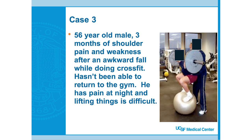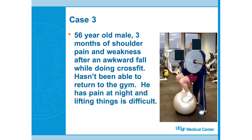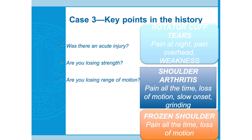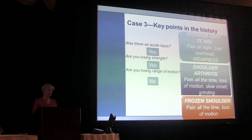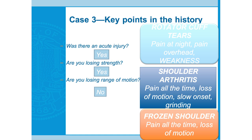Case three: 56-year-old male with three months of shoulder pain and weakness after an awkward fall doing CrossFit — CrossFit keeps me in business. He hasn't been able to return to the gym, has pain at night, and lifting is difficult. Running the algorithm: acute injury — yes. Losing strength — yes. Losing range of motion — not really. He has pain at night, pain with overhead activity, and weakness, but no restrictions in motion and no grinding, which rules out frozen shoulder. This looks like a rotator cuff tear.